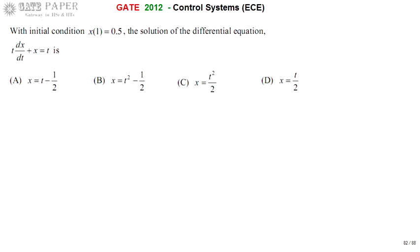Hello, we are discussing GATE 2012 ECE paper. With initial condition x(1) = 0.5, find the solution of the differential equation. That is, you are going to find the x value in terms of t.